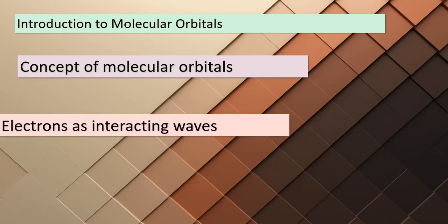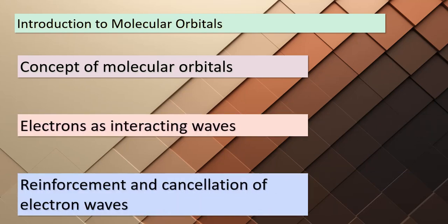Today we're about to delve into the fascinating realm of molecular orbitals. Let's draw a parallel with something you might find surprising: the captivating meeting of two seas at Grenin beach in Denmark. Just as the waves from different seas collide and interact, electrons in molecules also behave like waves that can interact with one another. Imagine these electrons as waves of the sea, at times reinforcing each other's behavior and at other times canceling each other out. This interaction between electron waves forms the basis of our model for understanding bonding.